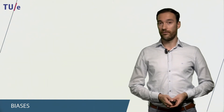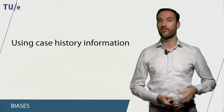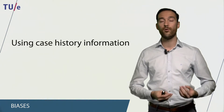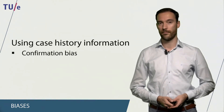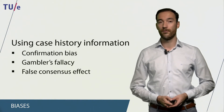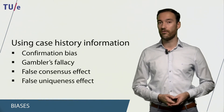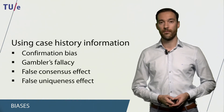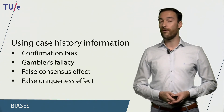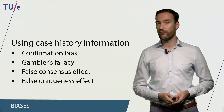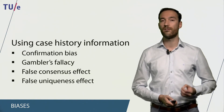In addition to heuristics, we also make use of biases, which means we use case history information rather than statistical information to make behavioral decisions. I will describe four of those today: the confirmation bias, gambler's fallacy, the false consensus effect, and the false uniqueness effect. Confirmation bias states that we tend to search for information that confirms our expectations. Gambler's fallacy states that we use knowledge from the past to make predictions for the future. The false consensus effect states that we overestimate the number of people who agree with us. And the false uniqueness effect states that we underestimate the number of people who share our most valuable traits.